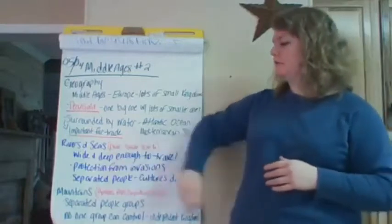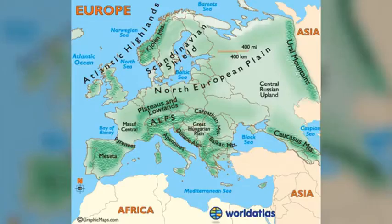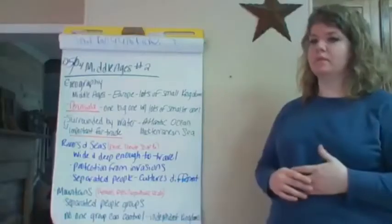Now with your rivers and seas, you also have lots of different mountain ranges in Europe as well. You have the Pyrenees, you have the Alps, the Carpathians, the Urals.